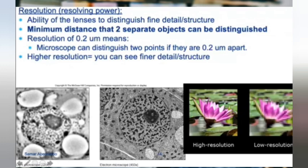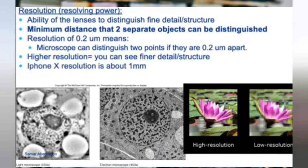Looking at this image, the left side is low resolution and the right side is high resolution. Higher resolution means a better image. Resolution is defined as the minimum distance that can separate two objects. With our light microscope the resolution is 0.2 micrometers, or microns — microns and micrometers are the same thing.